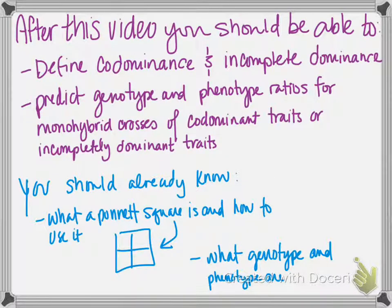After this video, you should be able to define codominance and incomplete dominance, and predict genotype and phenotype ratios for monohybrid crosses of codominant traits or incompletely dominant traits. You should already know what a Punnett square is, and you should already be aware of genotype and phenotype and be able to figure those for normal Mendelian traits.